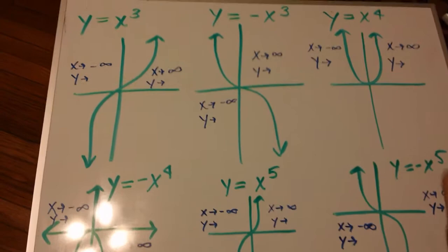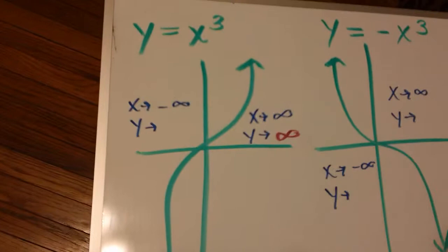Now, if you look at the graphs on this one, as x approaches infinity, the y's are getting bigger, so it's also approaching infinity. As this one approaches negative infinity, this one also approaches negative infinity.